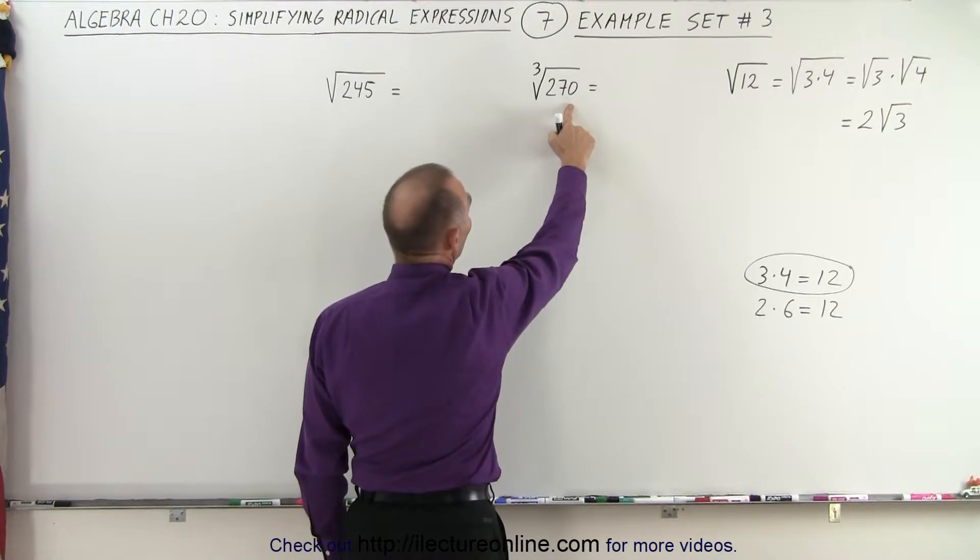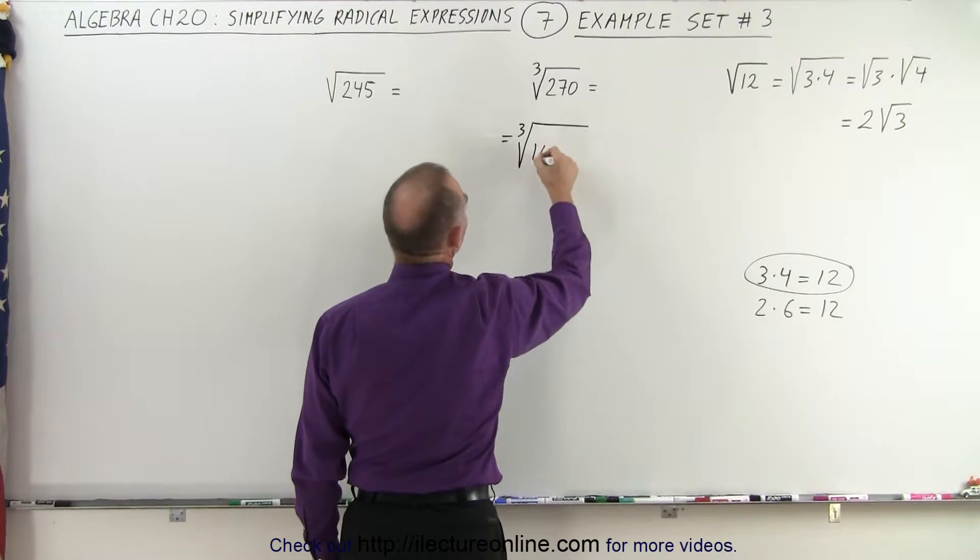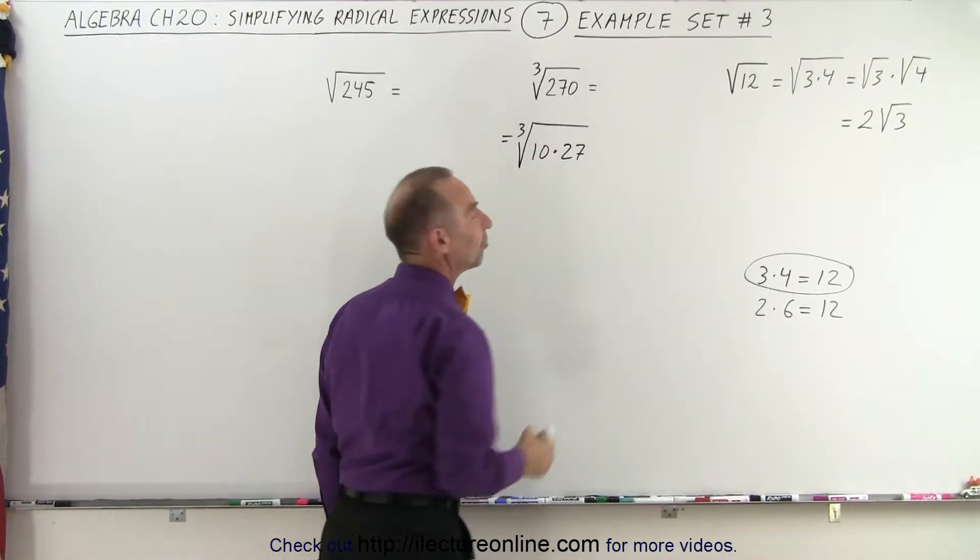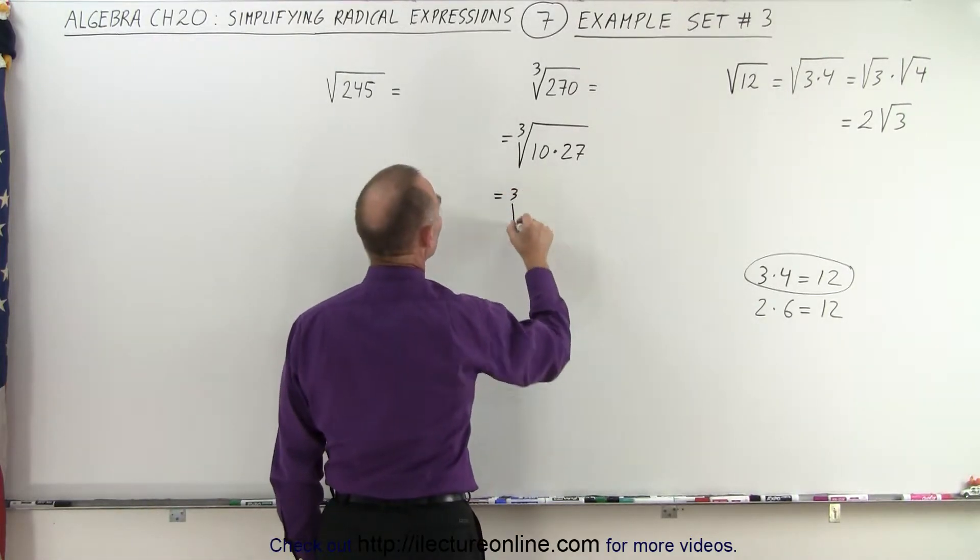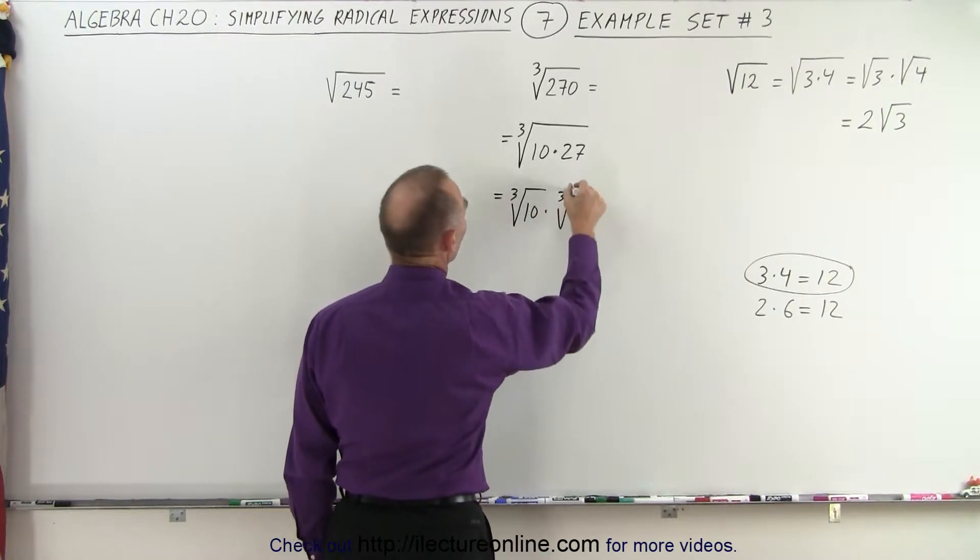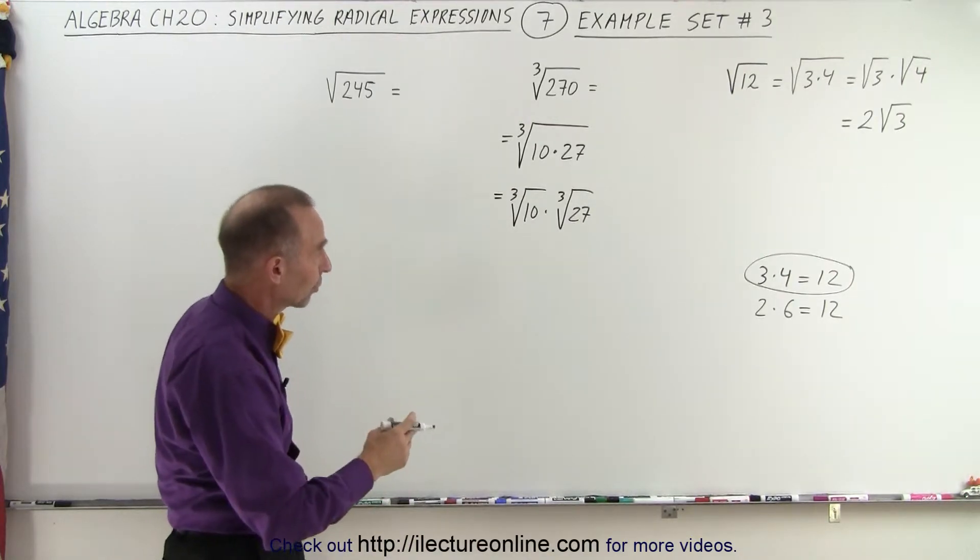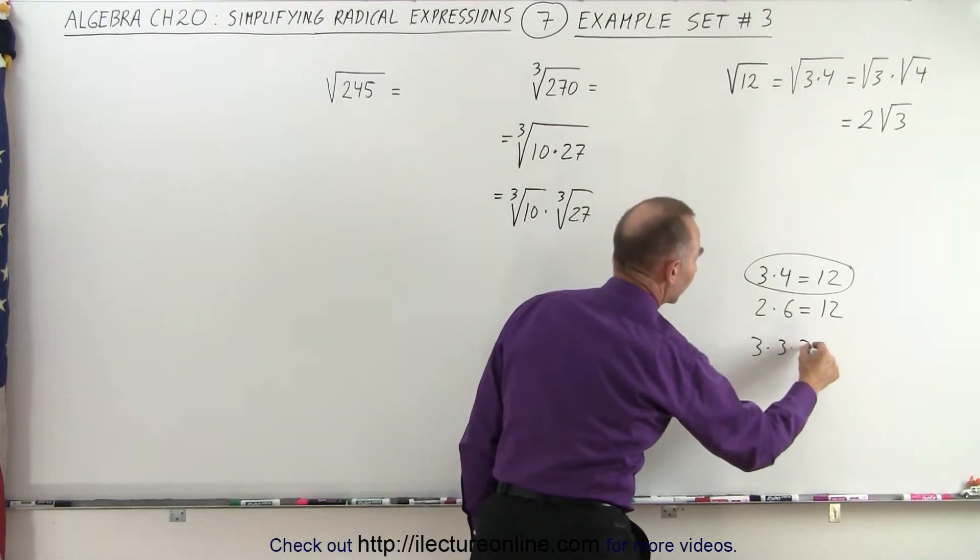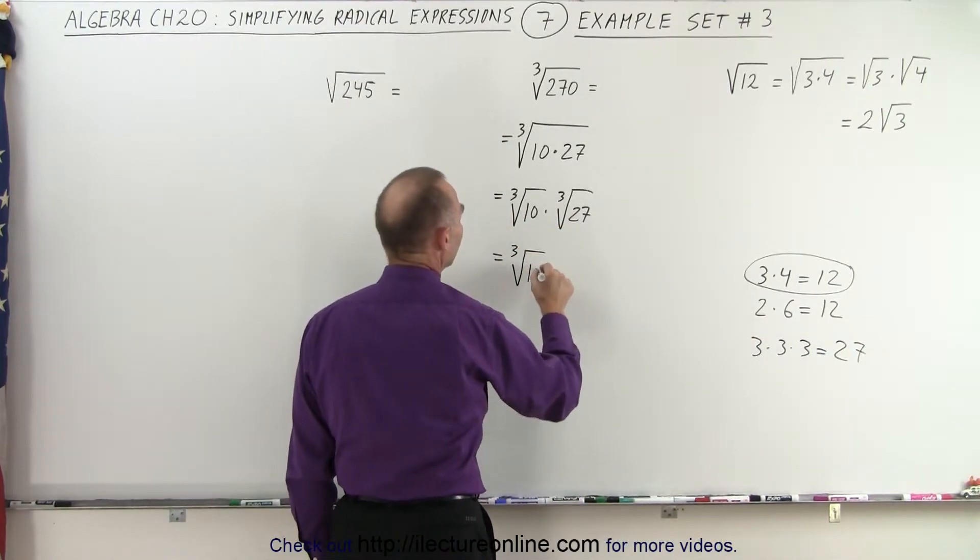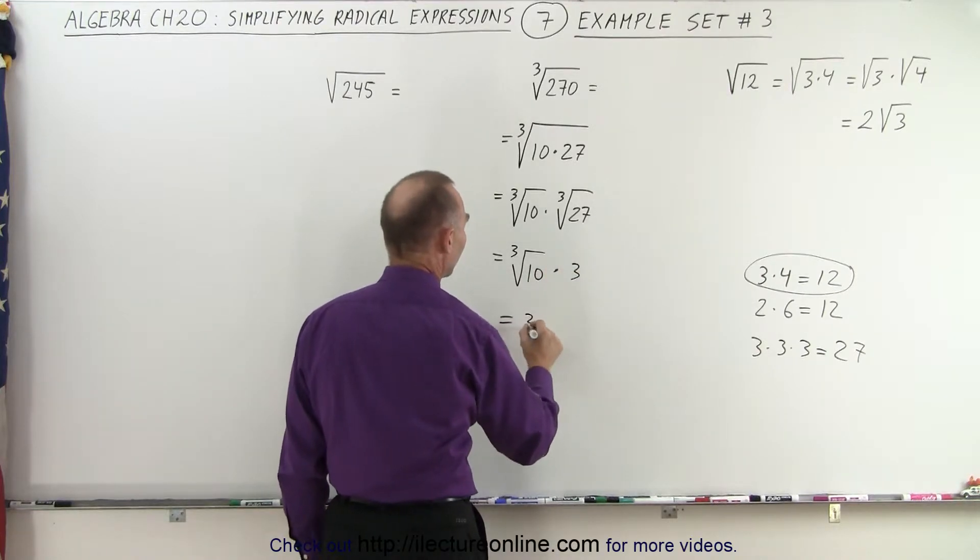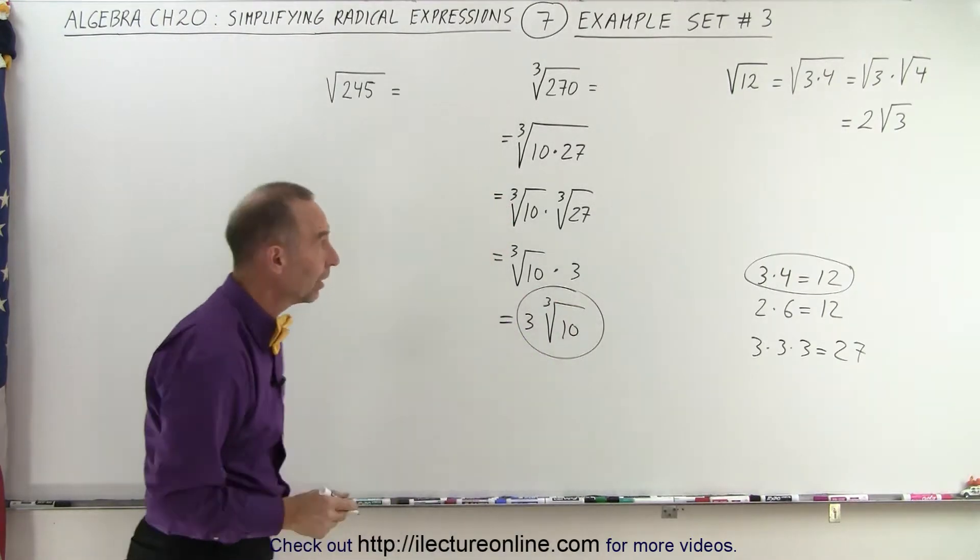When you see something like this, you say, well, this can be rewritten as the cube root of 10 times 27 because it ends in a 0. So go ahead and factor out a 10, so to speak, and then you realize that this is equal to the cube root of 10 times the cube root of 27. And then you have to recognize that, yes, you can take the cube root of 27, that's equal to 3, because 3 times 3 times 3 equals 27. So this can be written as the cube root of 10 times 3, or write the 3 first, 3 times the cube root of 10 as the most simplified form of that radical.